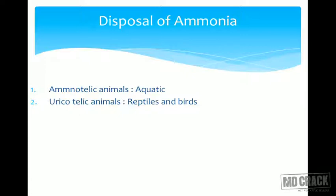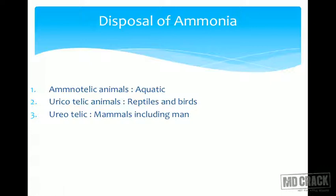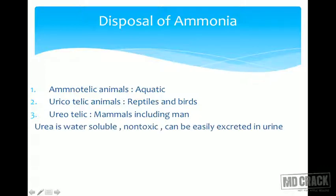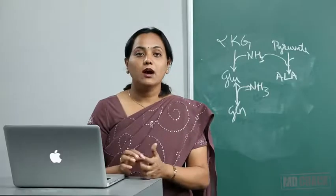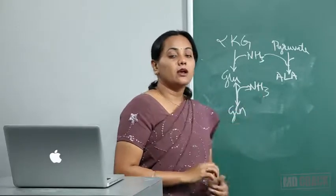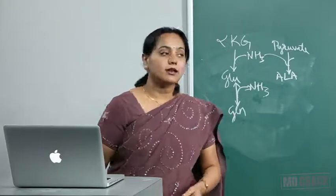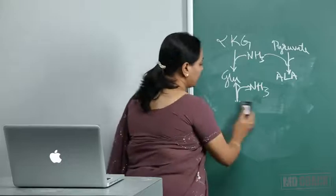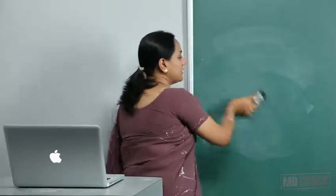Urea is water-soluble, non-toxic, and can be easily excreted in urine. The process by which ammonia is detoxified in liver cells is called the urea cycle, also known as the Krebs-Henseleit cycle — distinct from the Krebs (TCA) cycle. The urea cycle converts ammonia into urea.